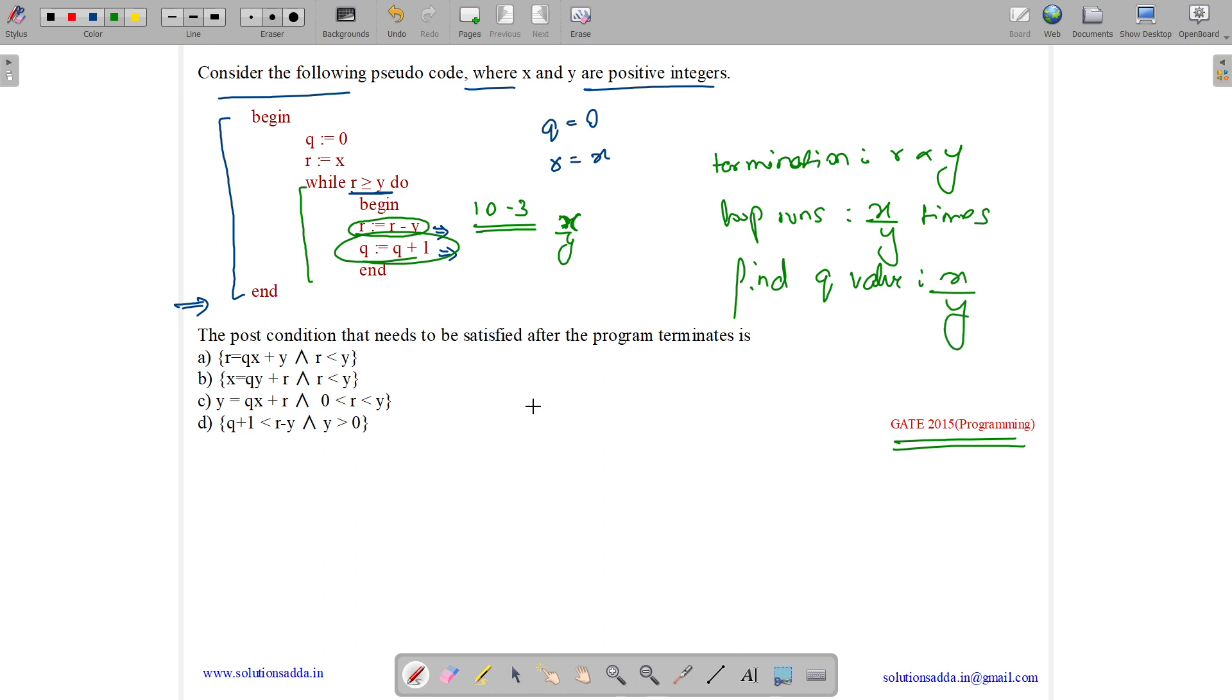What will be r? Suppose for this example we are decrementing it by 3 each time. So initially it will be 10. Let us suppose x is 10 and y is 3.